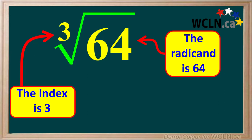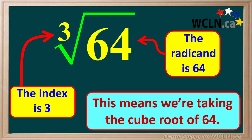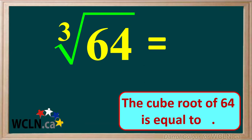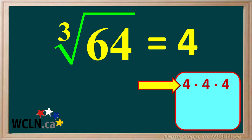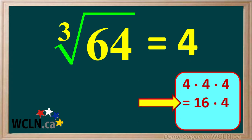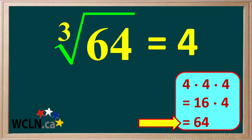Here we have an expression where the index is 3 and the radicand, or number under the radical sign, is 64. This means we're taking the cube root of 64, and we know that the cube root of 64 is equal to 4. This means that 4 multiplied by itself 3 times is equal to 64 — 4 times 4 times 4 is equal to 16 times 4, which is equal to 64.